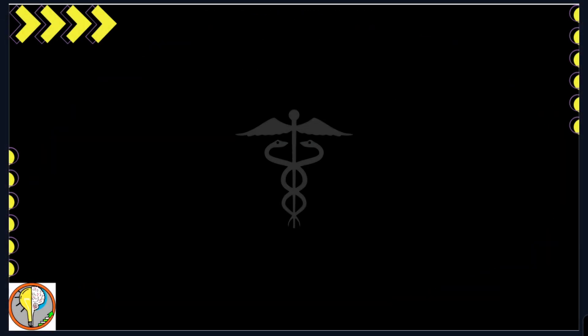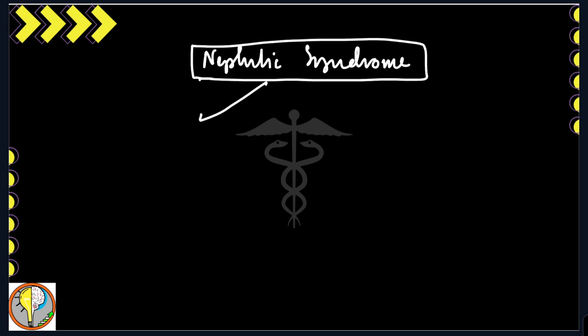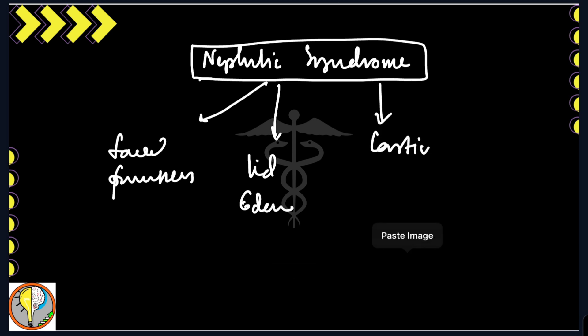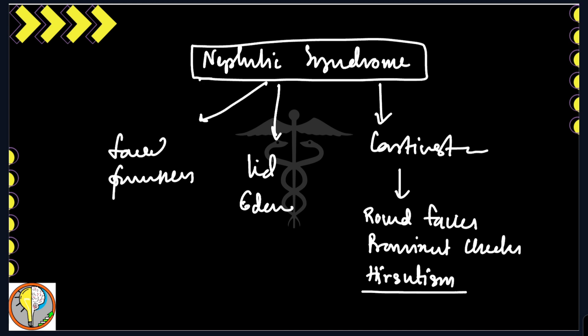Suppose a patient came with nephrotic syndrome. The patient can have facial puffiness, lid edema. As the patient is on corticosteroids, you can have moon facies or prolonged corticosteroid therapy effects like round faces, prominent cheeks, and hirsutism. The patient is very young, in a pediatric age group, but has eruption of hairs in the face. Facies is very important in this way for your practical examination.